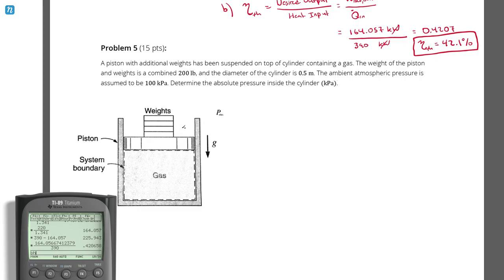This is similar to the problem we answered earlier. We are looking for an absolute pressure. Remember that absolute pressure contains the atmospheric pressure's contribution — it is the actual pressure. The relative pressure would be what a gauge would read, the gauge pressure, which is the difference between the absolute pressure and the atmospheric pressure. So we're not looking for gauge pressure.